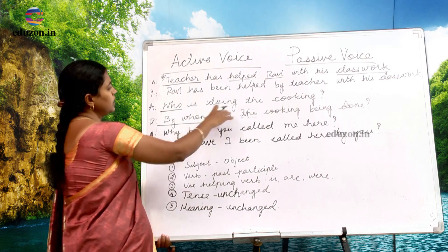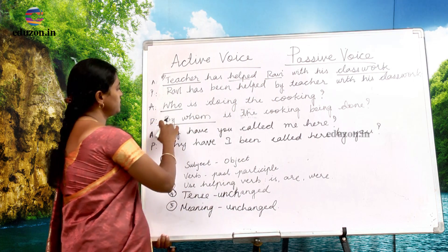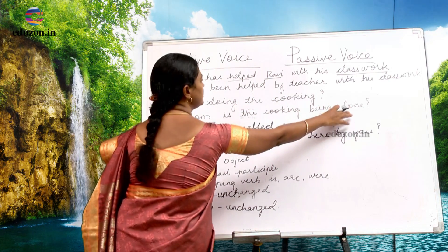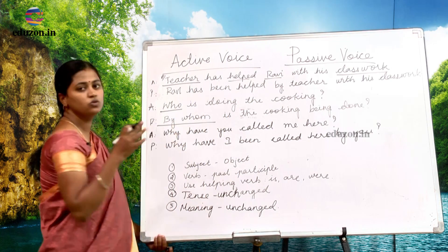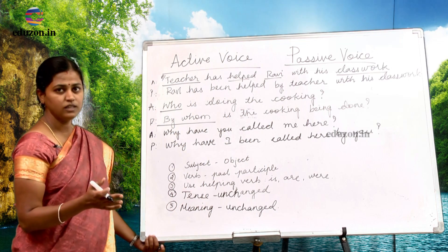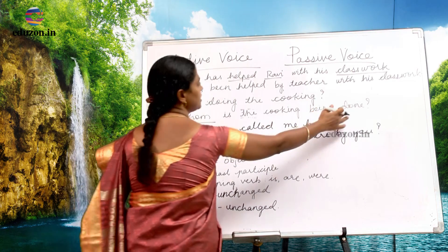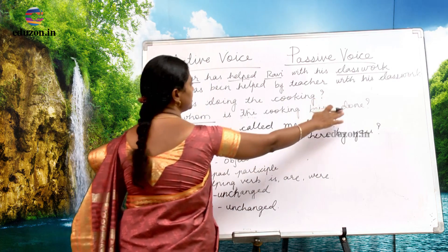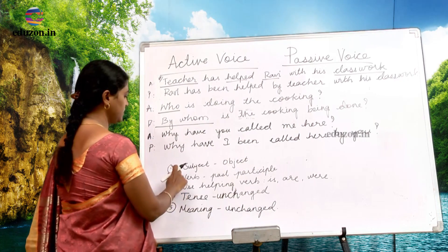This is a continuous tense, so we say 'being done.' The past participle of 'do' is 'done' — do, did, done. So 'done' is correctly used as the past participle here, and the helping verb 'being' is used. The correct passive voice sentence is: 'By whom is the cooking being done?'